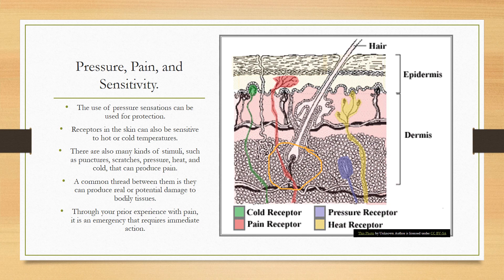Receptors in the skin can also be sensitive to hot or cold temperatures. Many kinds of stimuli — punctures, scratches, pressure, heat, and cold — can produce pain. A common thread between them is that they can cause real or potential damage to bodily tissues. Through prior experience with pain, our body recognizes it as an emergency requiring immediate action, such as pulling away from a hot stove.